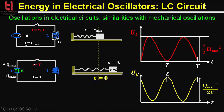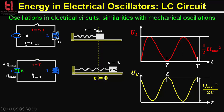After t = T — when a complete cycle is finished — the magnetic field is completely dissipated, the current stops, and the charge is again stored in the capacitor with the opposite polarity as before. This is equivalent to the expanded spring-mass system where velocity equals zero and the energy is all potential. These two figures represent the variation of energies with time.